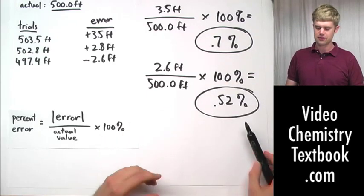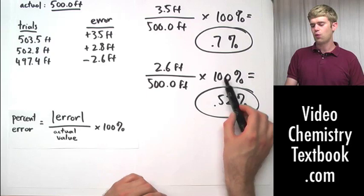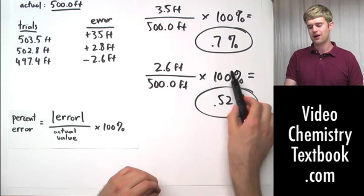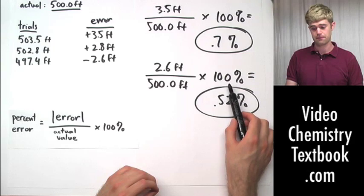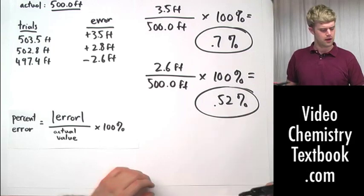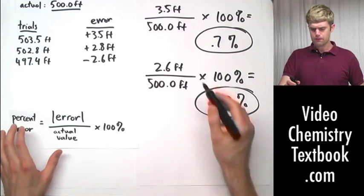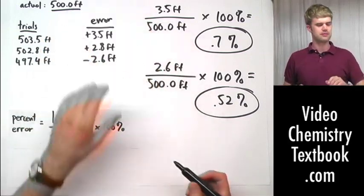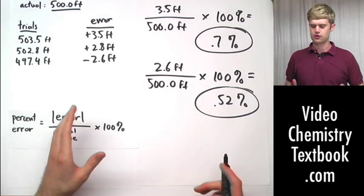If you're a little bit worried about the significant figures here, keep in mind that 100% is part of the definition. It's part of the equation. So we don't have to worry about significant figures here. Now, percent error we've looked at for these different trials for the measurement of something that was 500 feet.